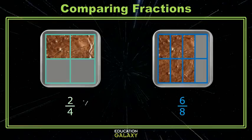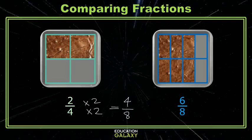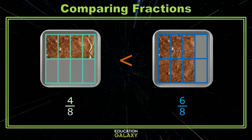We'll take 2 fourths, multiply the numerator by 2 and the denominator by 2. And I get the equivalent fraction 4 eighths. And I can see that 4 eighths is less than 6 eighths. Let's try another example.